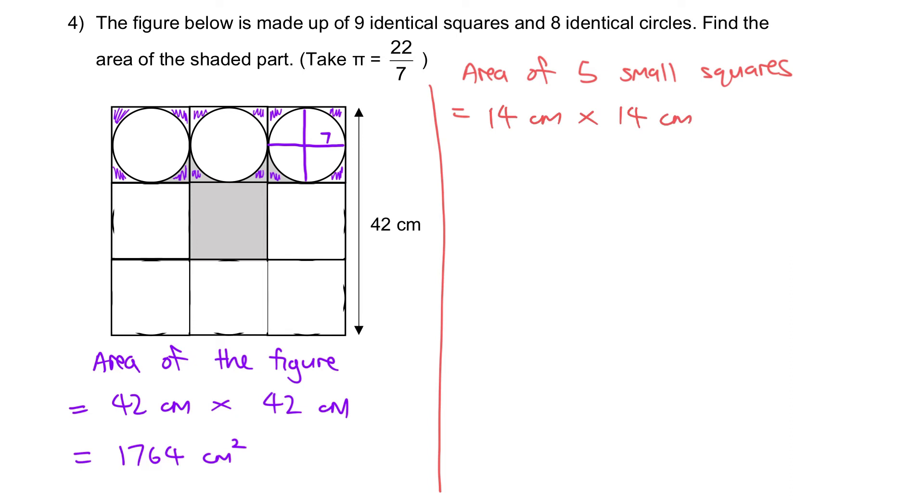So 14 times 14 - that will give you the area of one small square. We want to have five, so we multiply it by five to give us 980 cm squared.